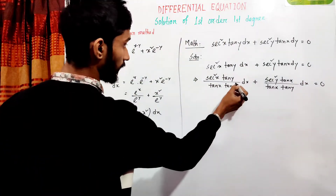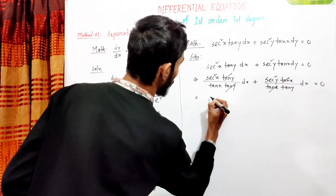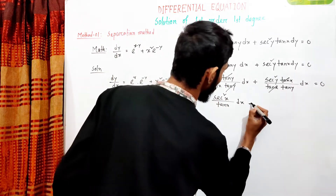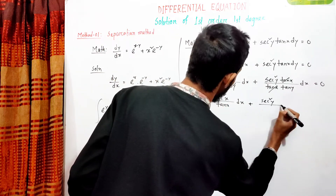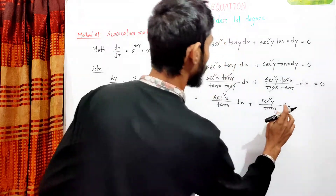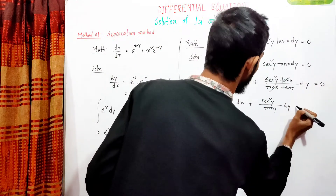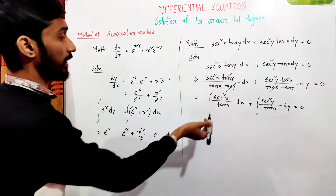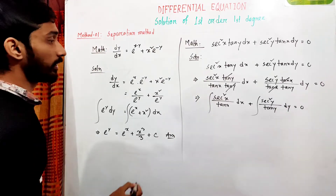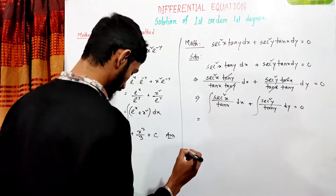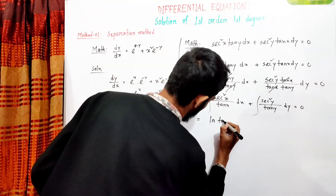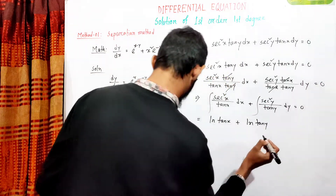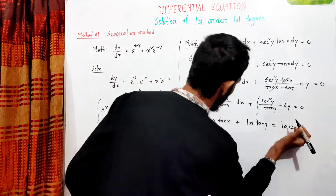We have to work through this. Tan y, tan y, tan x, tan x. We have tan x, tan y, tan x, tan y, and setting tan x tan y equal to zero. Integrating, we get log tan x and log tan y equals log tan x plus C.